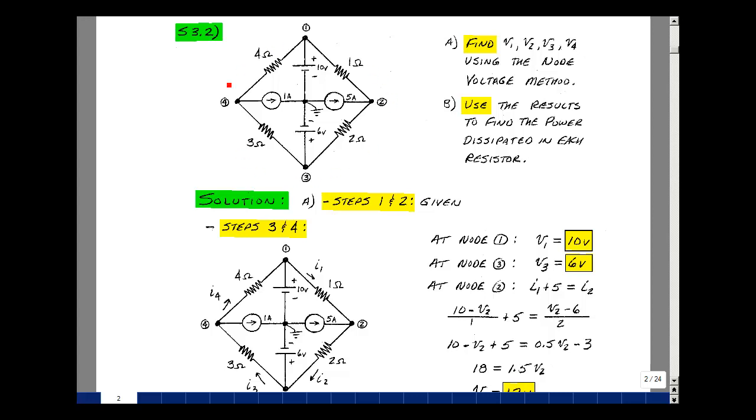Given the circuit, find the node voltages V1, V2, V3, and V4 using the node voltage method. Here's node voltage 1, node 2, node 3, and node 4 with respect to ground. Then use these results to find the power dissipated in these four resistors.